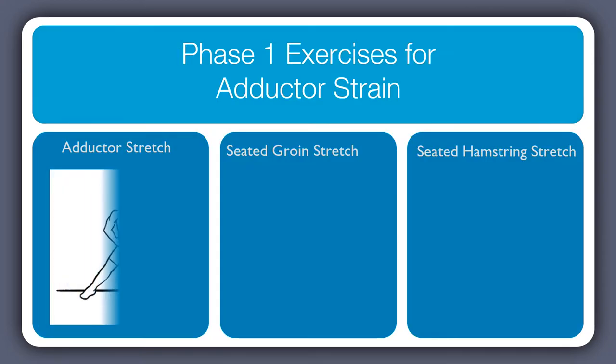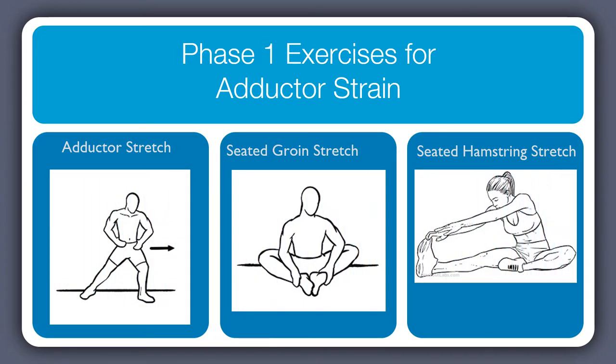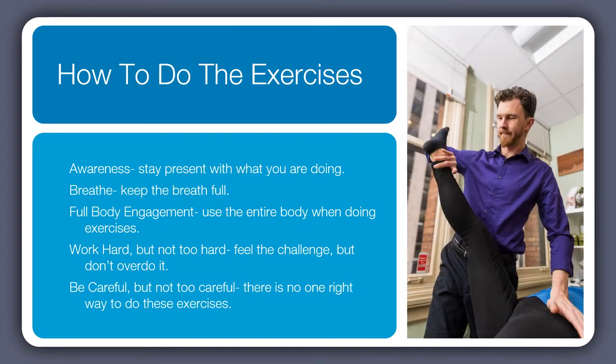Phase one exercises for adductor strain are the adductor stretch, seated groin stretch, and seated hamstring stretch. When doing all of these exercises, you want to do them with awareness and with breath. You want to feel your full body, know that you're working hard up to your edge, and also be careful with your exercises.